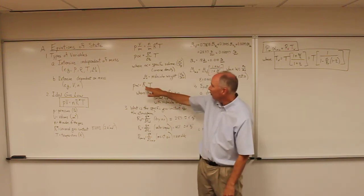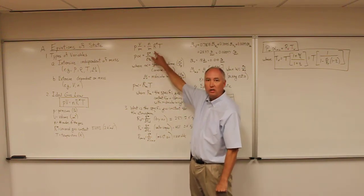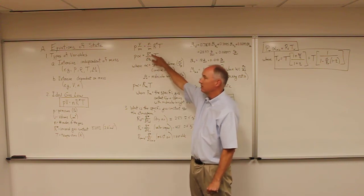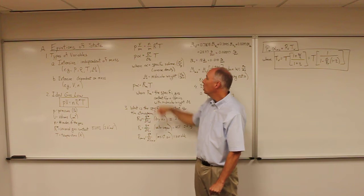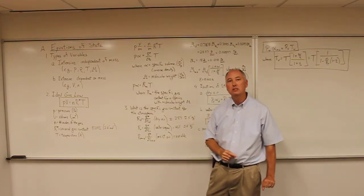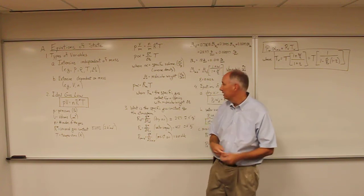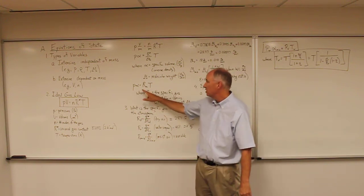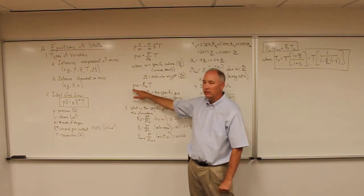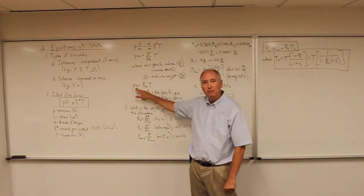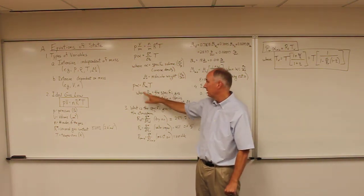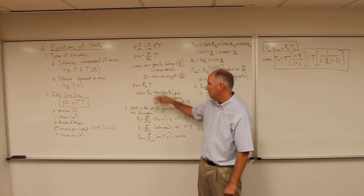We redefine R* over the molecular weight — the universal gas constant divided by the molecular weight of your gas — as the specific gas constant for a gas of molecular weight M. Our equation in intensive form then becomes: pressure times specific volume equals the specific gas constant for a gas of molecular weight M times temperature.